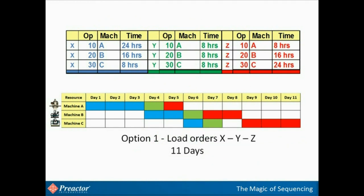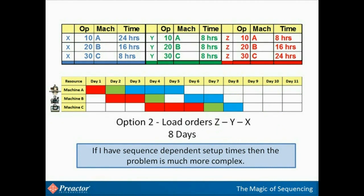Product X will take three days for the first operation, two days for the second, and one day for the third. The run times for the other two products are shown too. The bottom table shows how the schedule would be if we added all the operations for X first, then Y, then Z. It takes 11 days to complete all three products. Now, let us load it the opposite way around: Z first, then Y, and then X. There are fewer gaps, and all three products are completed in eight days. That's three days less than before.